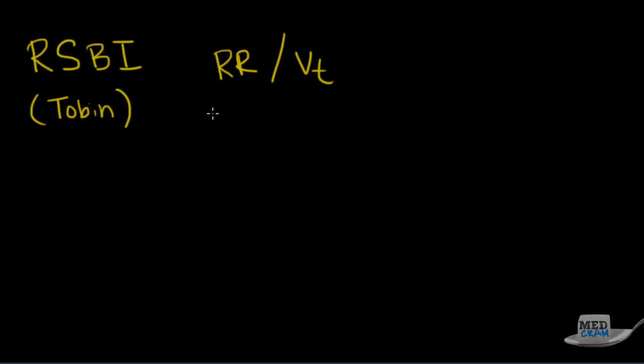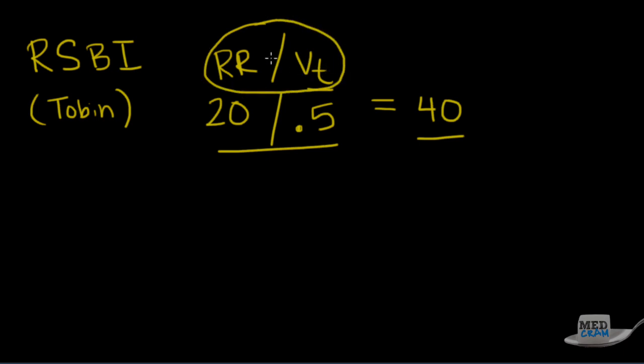And it's basically the respiratory rate divided by the tidal volume. Now, the respiratory rate is in terms of breaths per minute. Okay, so you can put down here the respiratory rate, which would be, let's say, 20. And the tidal volume, which is in liters. So you'd want to put that maybe, if it's 500 milliliters, then you would put a .5. Okay, so 20 divided by .5 is going to be about 40. Now, the key with the Rapid Shallow Breathing Index, as you can see from this equation, very simple equation.